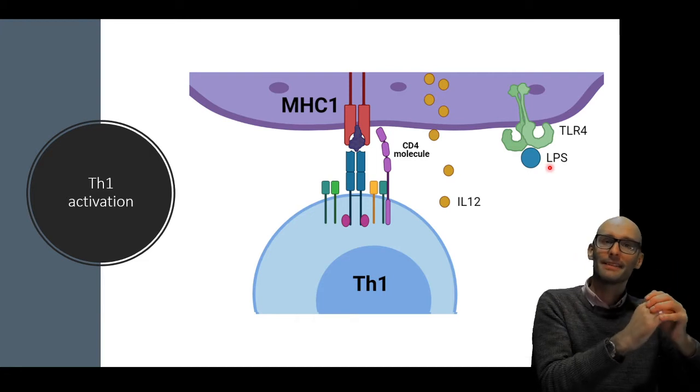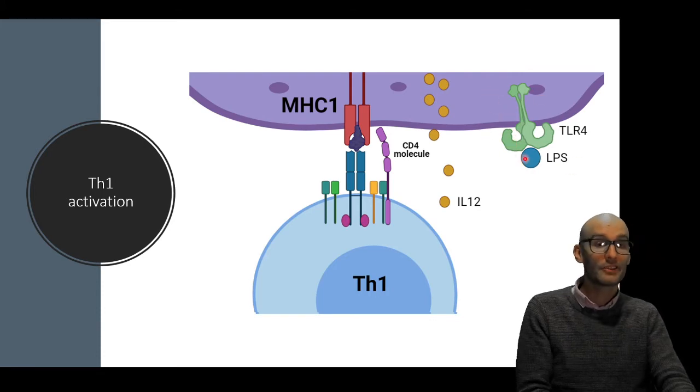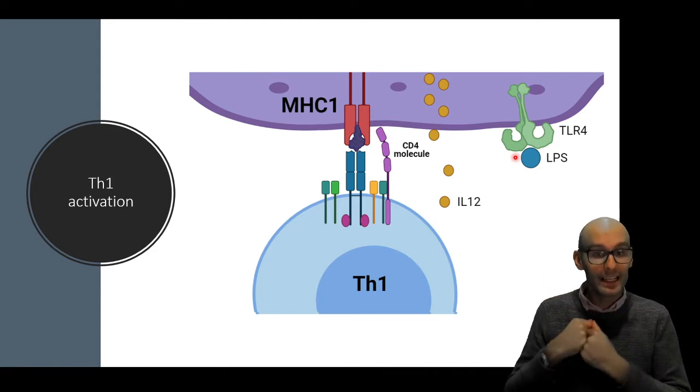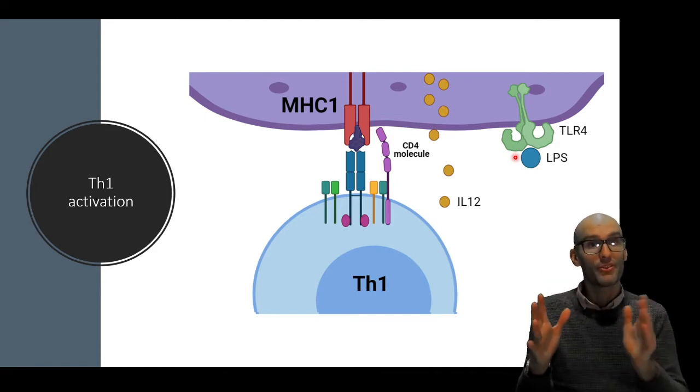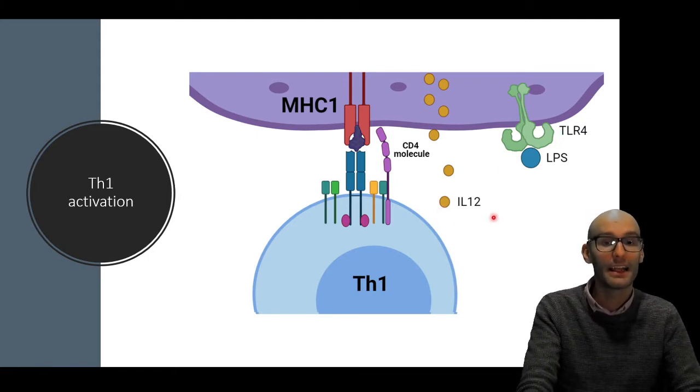So not only is this macrophage presenting an antigen to a T cell of a pathogen, it has also detected a pathogen-associated molecular pattern on its pattern recognition receptor called TLR4. It has detected LPS. This is just an example. It could be any of a number of pattern recognition receptors here. It has detected a PAMP. It will now release an inflammatory cytokine. So it's doing both things. It's antigen presenting and releasing inflammatory cytokines. And it's releasing IL-12.